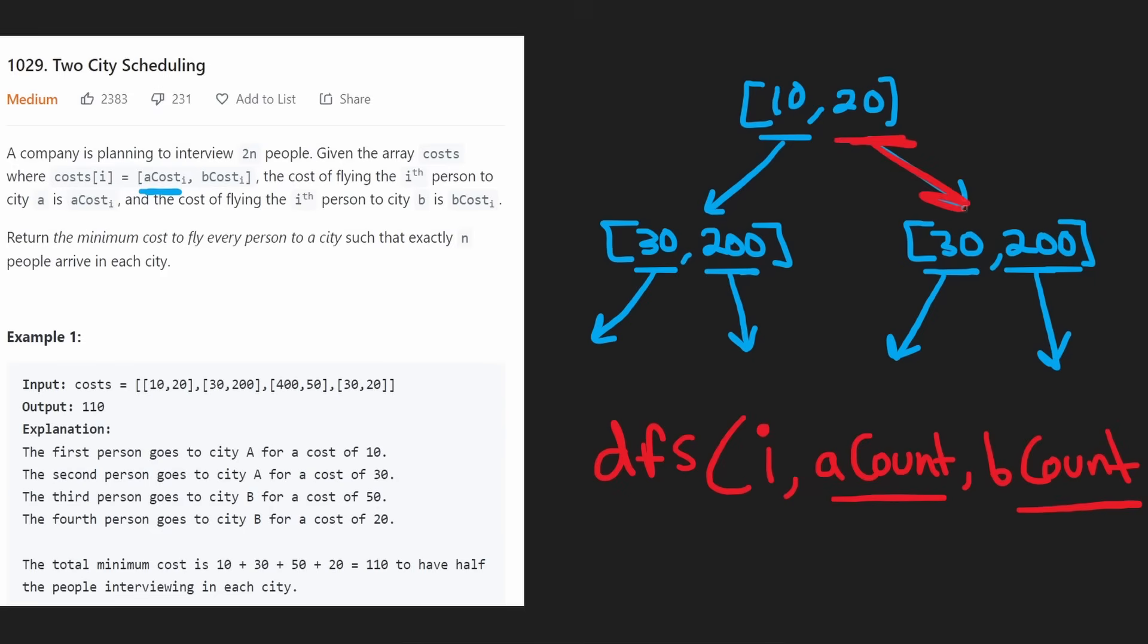Suppose we took this branch and put one person in city B, then took this branch and put one person in city A. We have two more values in our array, so we need at least one more person going to city A and one more person going to city B. From here, we're going to recursively call this function again with these parameters. But also notice if we took this path - put one person in city A, then one person in city B - then recursively we would call this exact same function with the same variables.